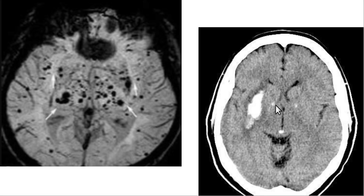Also shown here is calcification of the pineal gland, which is super common. We call these normal variant calcifications, but I don't actually think they are normal variants - I think they're due to destruction of tissue that's just so common we consider it normal. Bilateral basal ganglia calcifications and pineal calcification.